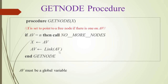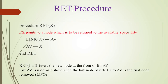In the returning procedure, for a node with address x, av is stored to link of x, and then x is stored to av. This means av points to the returned node, so the returning procedure inserts the new node at the front of the free list. av is used as a stack — the last node returned is the first node retrieved by get node, making it a LIFO structure.